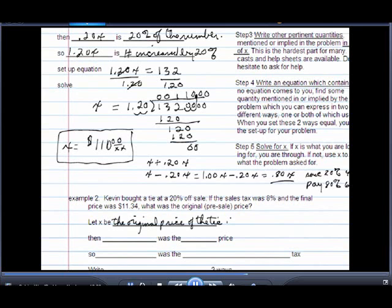Well, then what would be the discounted price? Well, if you save 20%, you pay 80%. So 80% was the 20% off price. 80% of x. If you save 20%, you pay 80%.